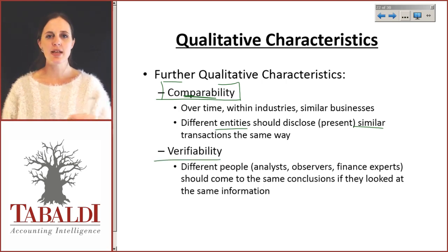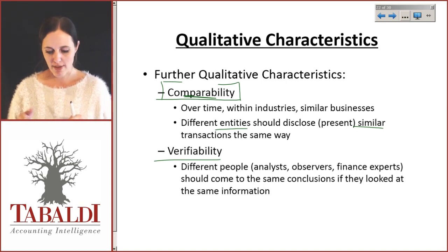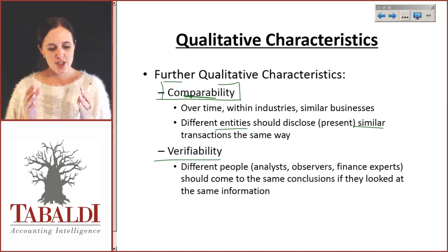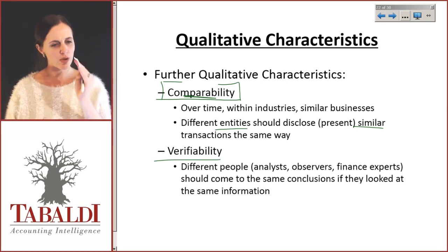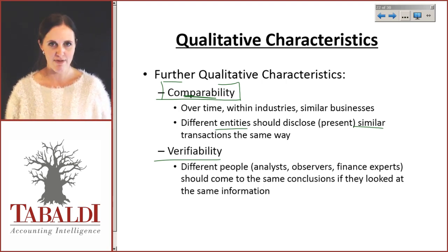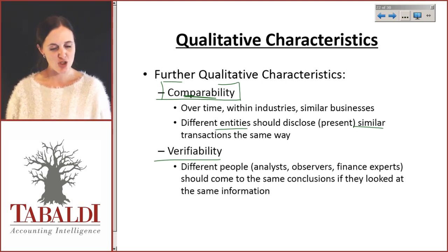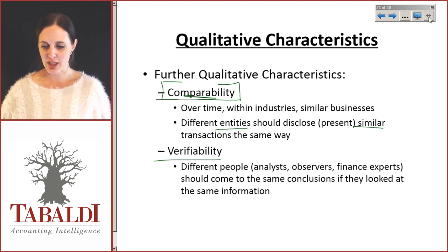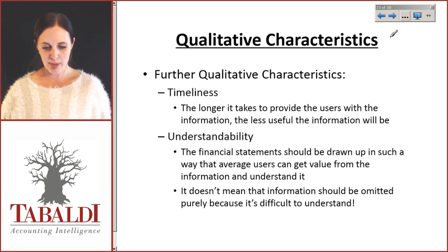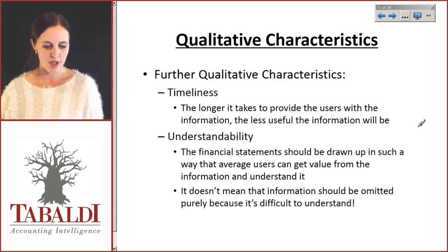Verifiability: if someone else comes along and creates the same information, they should come up with the same thing. It needs to be specific. It needs to be concise. Your information needs to be correct. It needs to be verifiable — you don't just suck it out of your thumb; it's got to come from somewhere. So comparability and verifiability are very important.